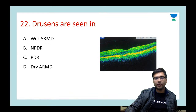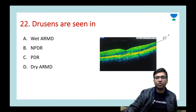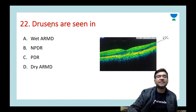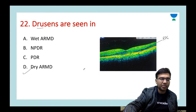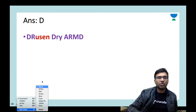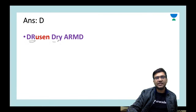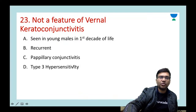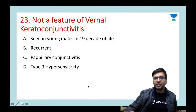Next question: drusens are seen in which of the following? In an OCT picture you can see elevation of the retinal pigment epithelium — this is seen in dry AMD. Remember: 'DR goes with DR' — drusen is seen in dry AMD.